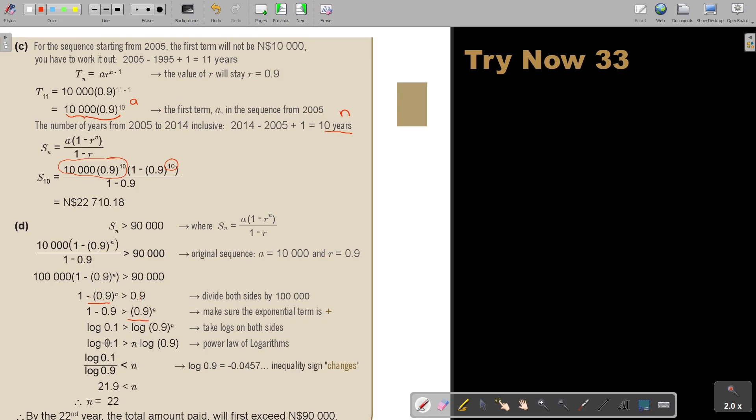And then I can first subtract, so I get 0.1. I take logs on both sides. I bring the N down. I divide, and N is bigger than 21. Don't forget that log 0.9 is negative. And if it's negative, it means the inequality must swap around.